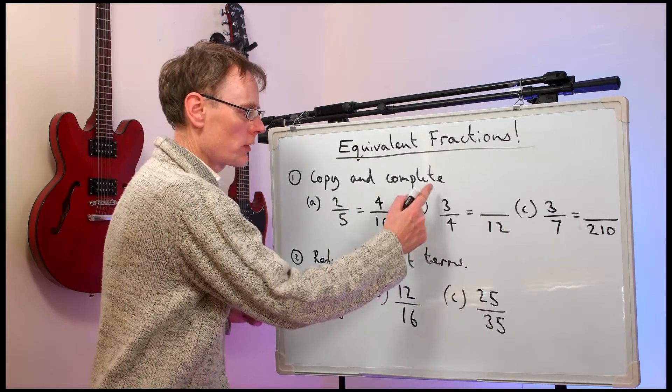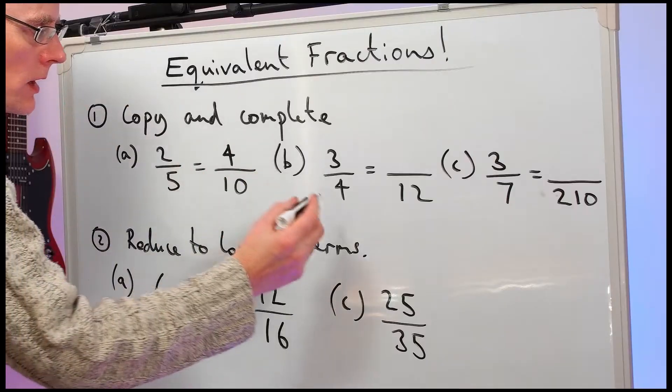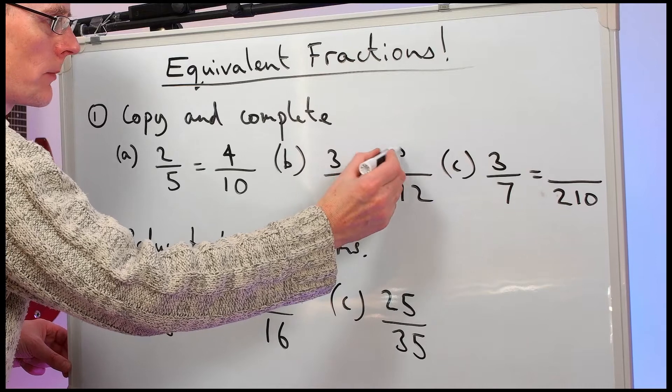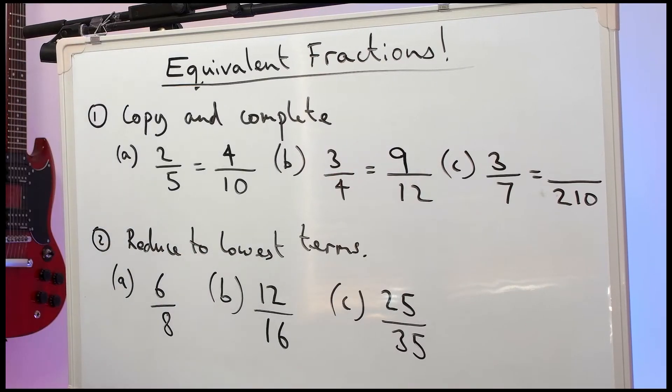Part B. Three-quarters is something out of twelve. Here the bottom has been multiplied by three. So we times the top by three. We get nine-twelfths.